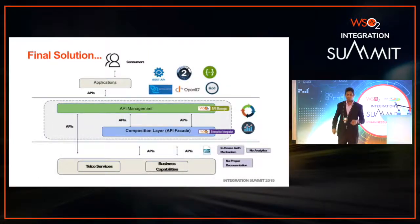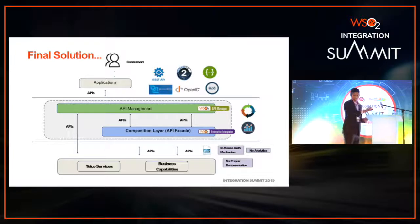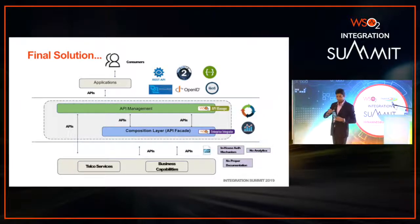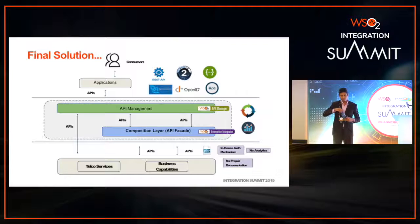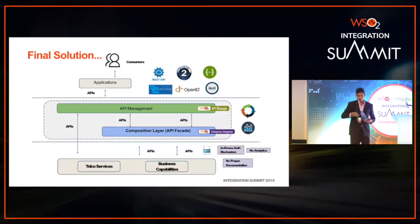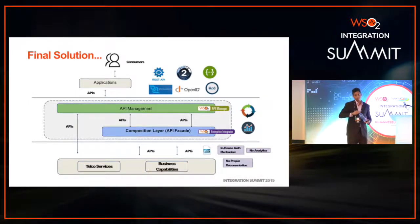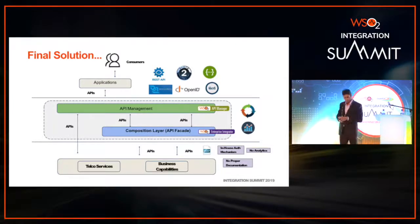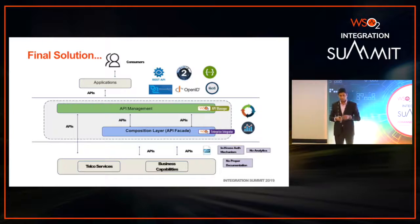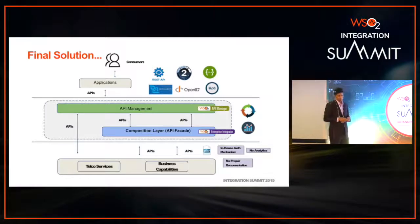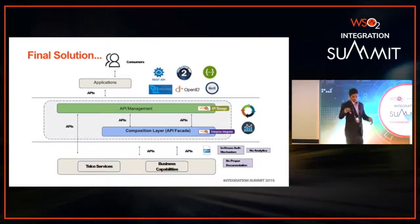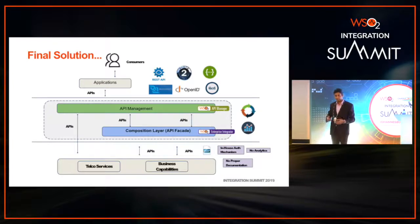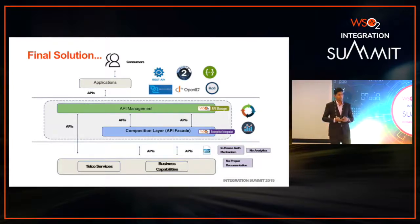The final solution will look like this: in the bottom layer we have API providers, in the top layer we have different kinds of clients, and in the middle layer you can see the API management layer. If you look closely there is another layer in the middle — that's the composition layer, which I will come to later. This is the final solution you get when you implement your API structure.